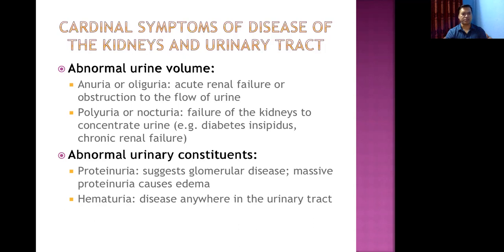Polyuria means excessive urine formation and is classically seen in diabetes mellitus, diabetes insipidus, chronic renal failure, and psychogenic polydipsia. In these conditions, the kidneys fail to concentrate urine or there is osmotic diuresis. Nocturia means passing urine at night — waking up three or more times nightly is not considered normal and may be a feature of polyuria.